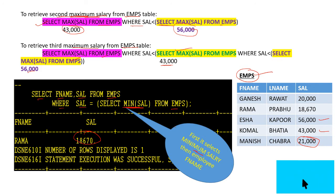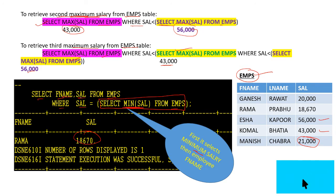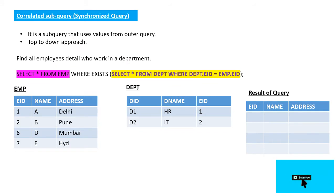For the minimum salary query, it first executes the subquery, then passes the result and displays the employee name and salary. This is the uncorrelated approach. Next is the correlated subquery, also called a synchronized query — it is a subquery that uses a value from the outer query.